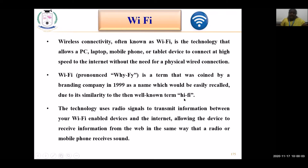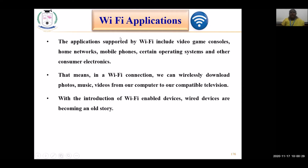Wi-Fi uses radio signals to transmit information between Wi-Fi enabled devices and the internet, allowing devices to receive information from the web — similar to how a radio or mobile phone receives sound. Applications supported by Wi-Fi include video game consoles, home networks, mobile phones, certain operating systems, and other electronics, enabling wireless downloading of photos, music, and video to compatible televisions.